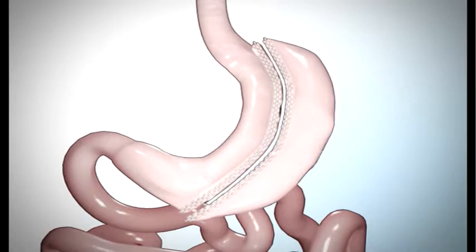Your surgeon may also use traditional stitches or a combination of both staples and stitches to seal each section of your stomach. This seal is called the suture line.